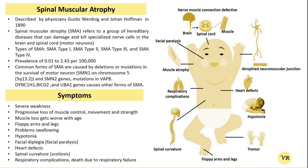These motor neurons are responsible for controlling voluntary muscle movements such as crawling, walking, swallowing, and breathing. The loss of these neurons leads to muscle weakness and atrophy over time.